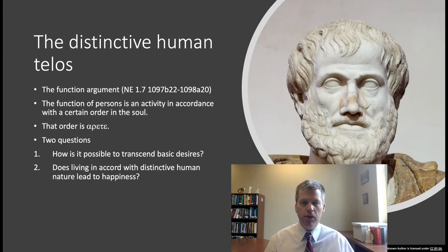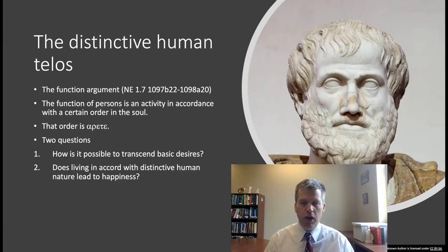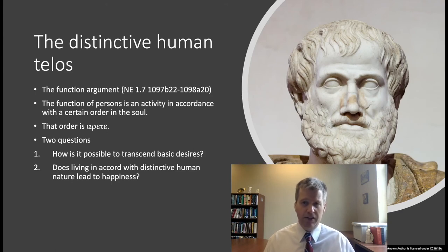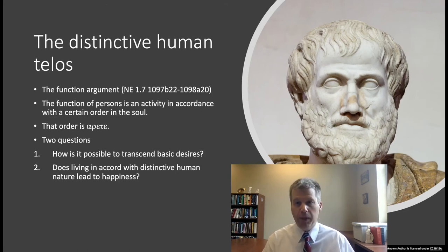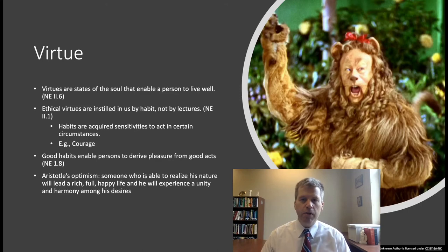Two questions arise about Aristotle's view. First, how is it possible to transcend basic desires — for food, shelter, and so on — and live in accord with this rational principle? Second, does living in accord with distinctive human nature actually lead to happiness? Is it a satisfying life? If not, Aristotle hasn't answered Thrasymachus's challenge from Book 1 of the Republic: why be moral? Why care about morality? To answer these, let's think more about Aristotle's view of virtue.